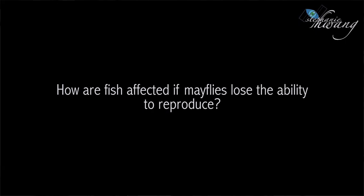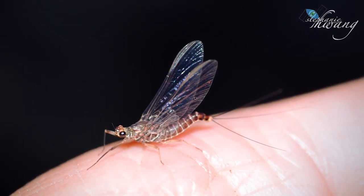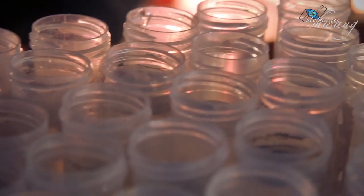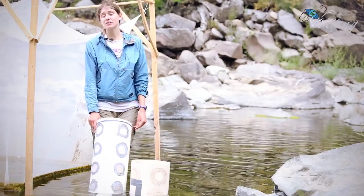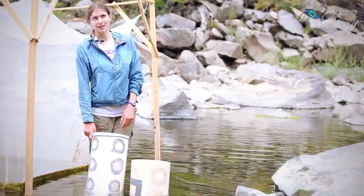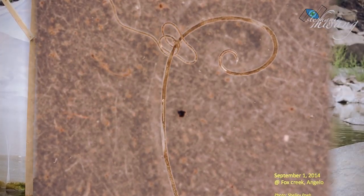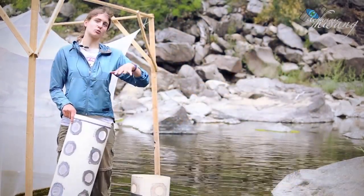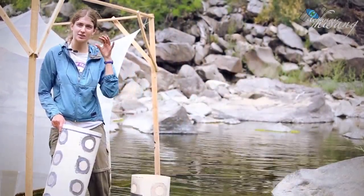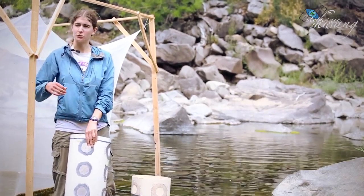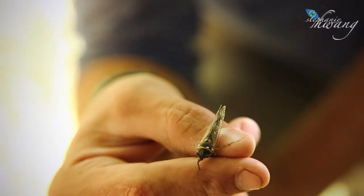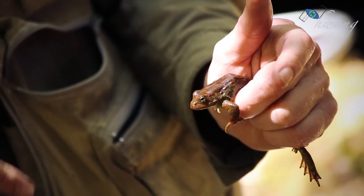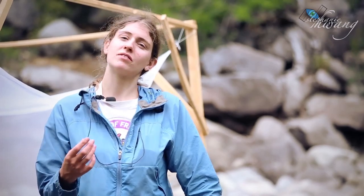We found nematodes a couple of years ago just by collecting mayfly adults as they were flying. We collected them, put them in water, and saw that these worm-like creatures emerged. There are roundworms that infect mayflies and are present in really high prevalence. We've been tracking the mayflies that Hiromi studies and seeing how many are infected by nematodes. It's a sub-project of Hiromi's, since she's focusing on mayflies and how they're related to fish, spiders, and other creatures in this watershed. I'm looking at the parasites because they completely sterilize the mayflies.